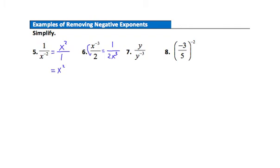Example 7: the negative exponent is in the denominator. Taking the y to the negative third and moving it to the numerator, I have the original y times y to the third power — now positive — over 1. Simplifying further: y to the first times y to the third gives y to the fourth power in the numerator over 1, which simplifies to y to the fourth.